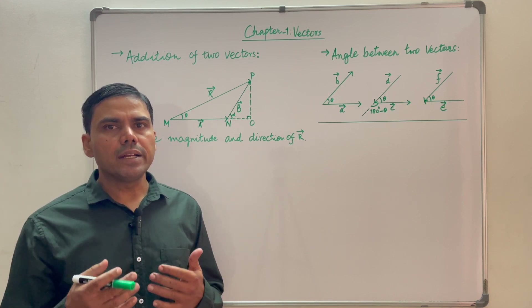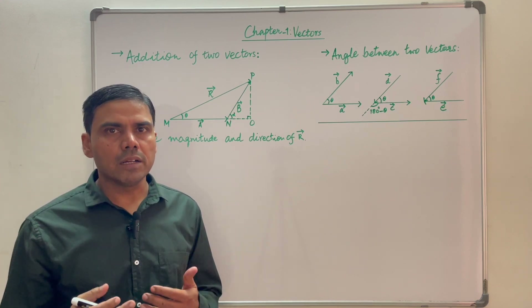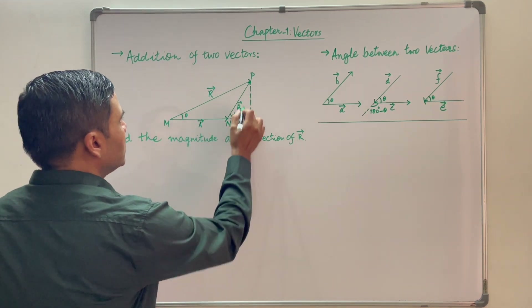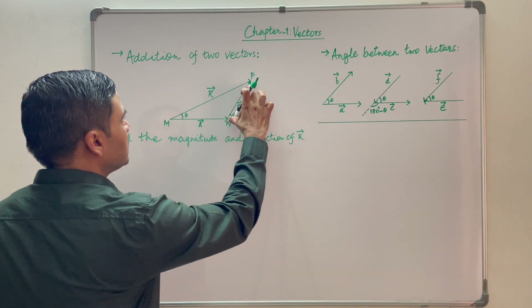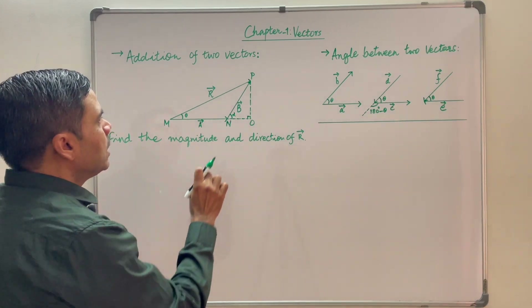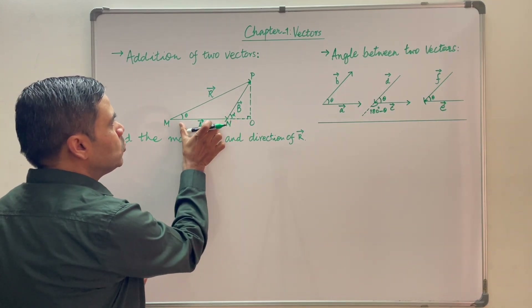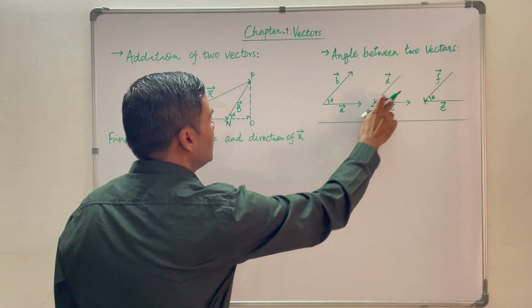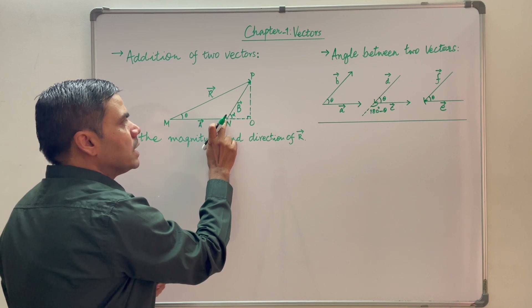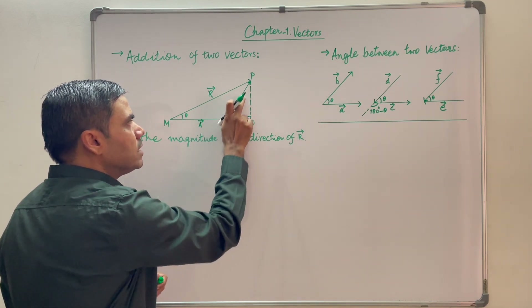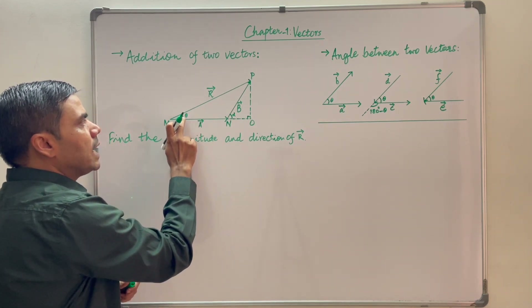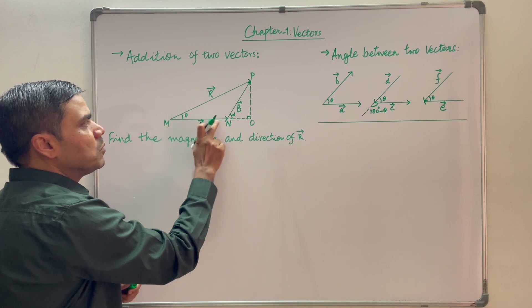Now let us find out the magnitude and direction of resultant vector R when two vectors A and B are added. In this figure, this is vector A, this is vector B, and this is resultant vector R. Alpha is the angle between the two vectors A and B. As the vectors are connected head to tail, the angle between them is the angle formed between the extended vector and the other vector, that is alpha here. We need to find out the magnitude of R and the angle theta it makes with one of the vectors.